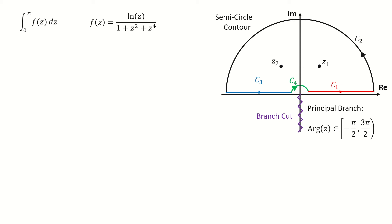we choose the principal branch from negative π/2 to 3π/2. So this contour contains four parts: c1, c2, c3, and c4. By Cauchy residue theorem, we can write this contour integral into this form.